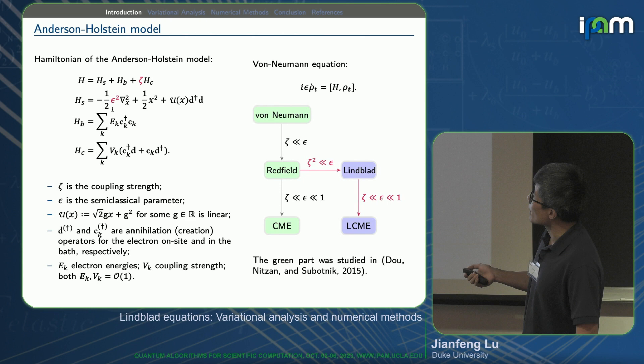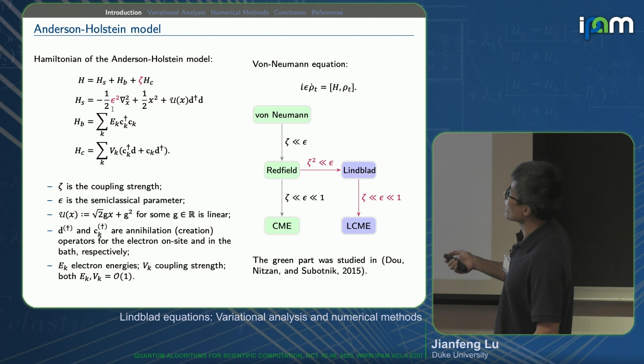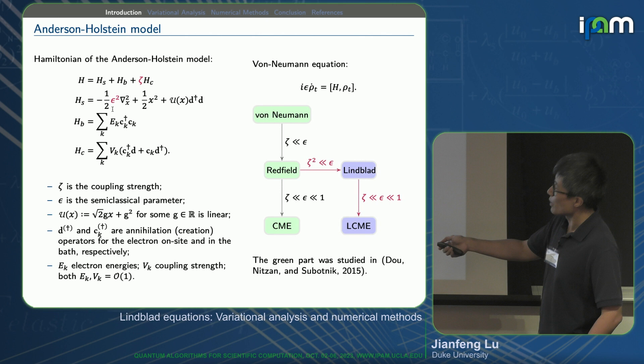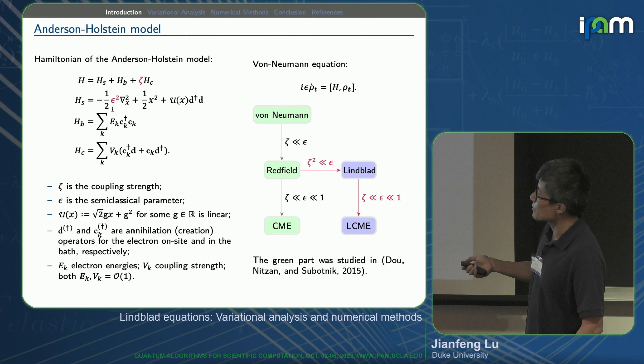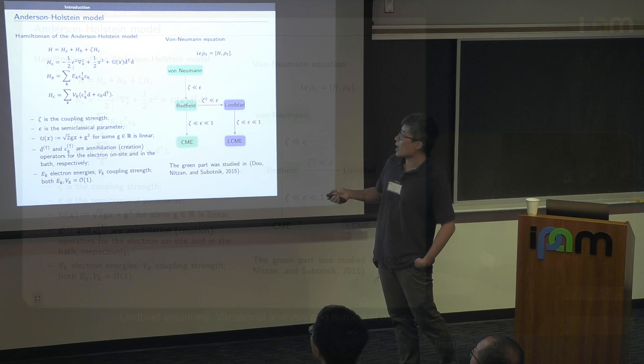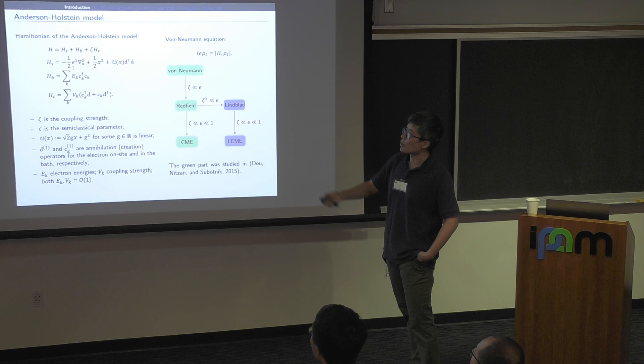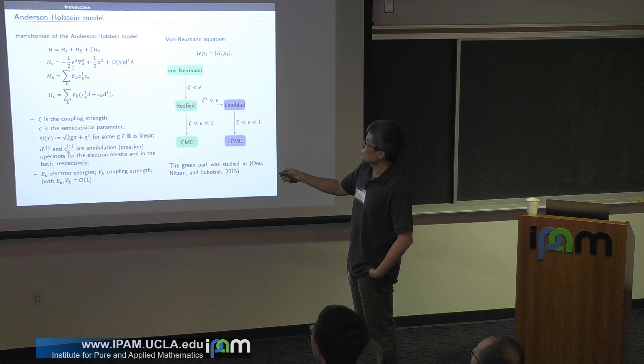Let me write down the Anderson-Holstein model. As you have seen, in these open quantum systems the Hamiltonian is written as a sum: a system part — in this case it's a phonon with one electron — a bath part, which is just non-interacting fermions, and then a linear coupling. The parameters E_k and B_k denote the modes in the phonon bath. The key parameters are gamma, the coupling parameter indicating how strongly the system couples with the bath, and epsilon, which can be thought of as a reduced Planck constant and a semi-classical parameter. When epsilon goes to zero, the position degree of freedom becomes more classical.